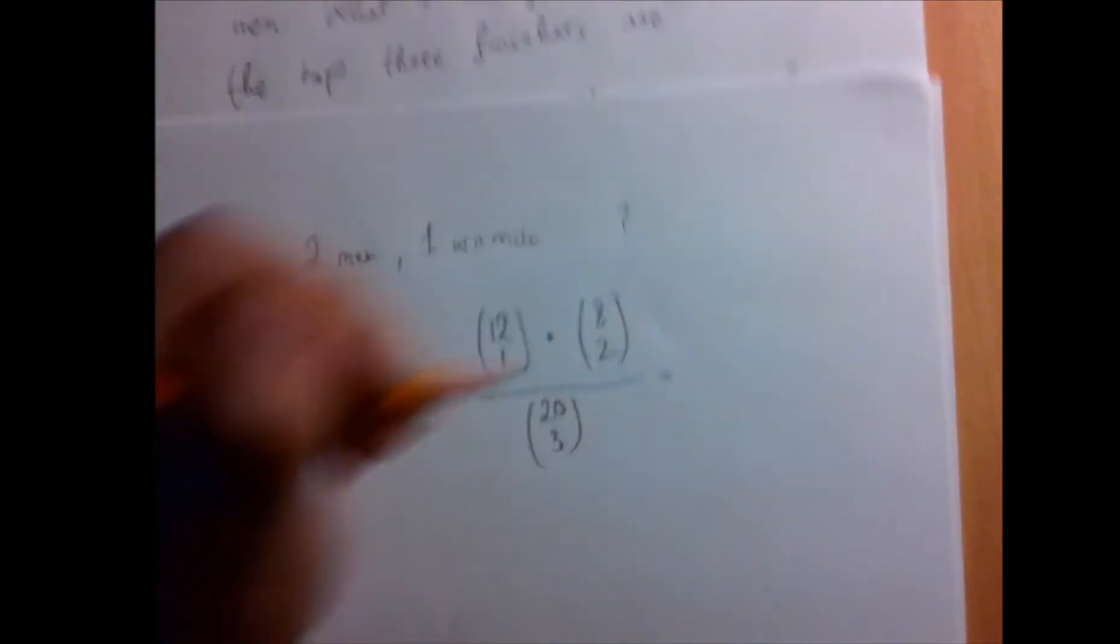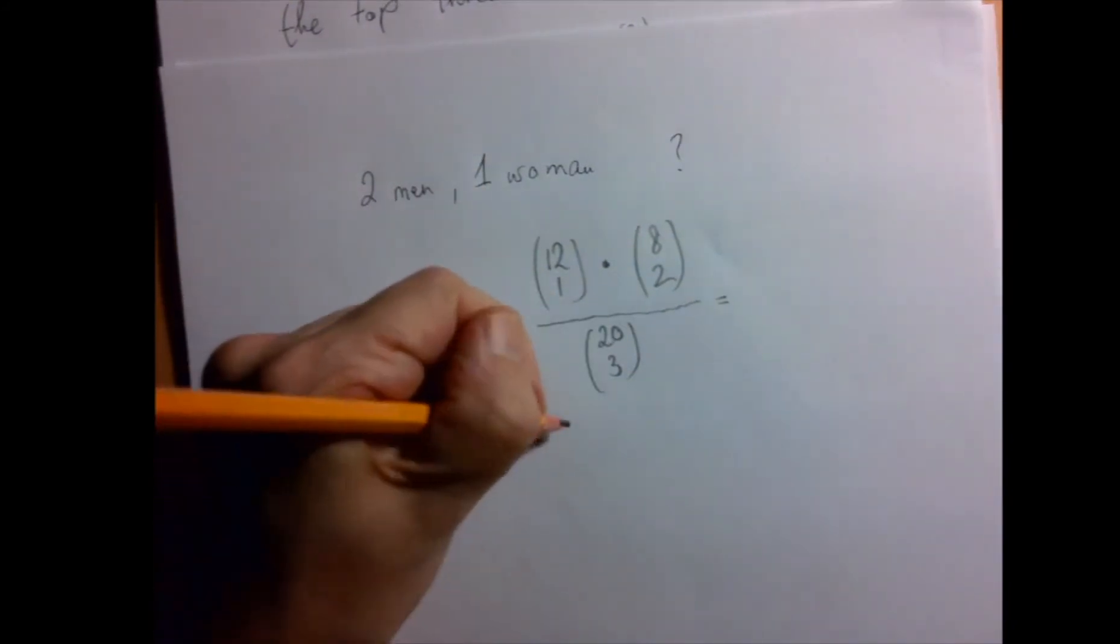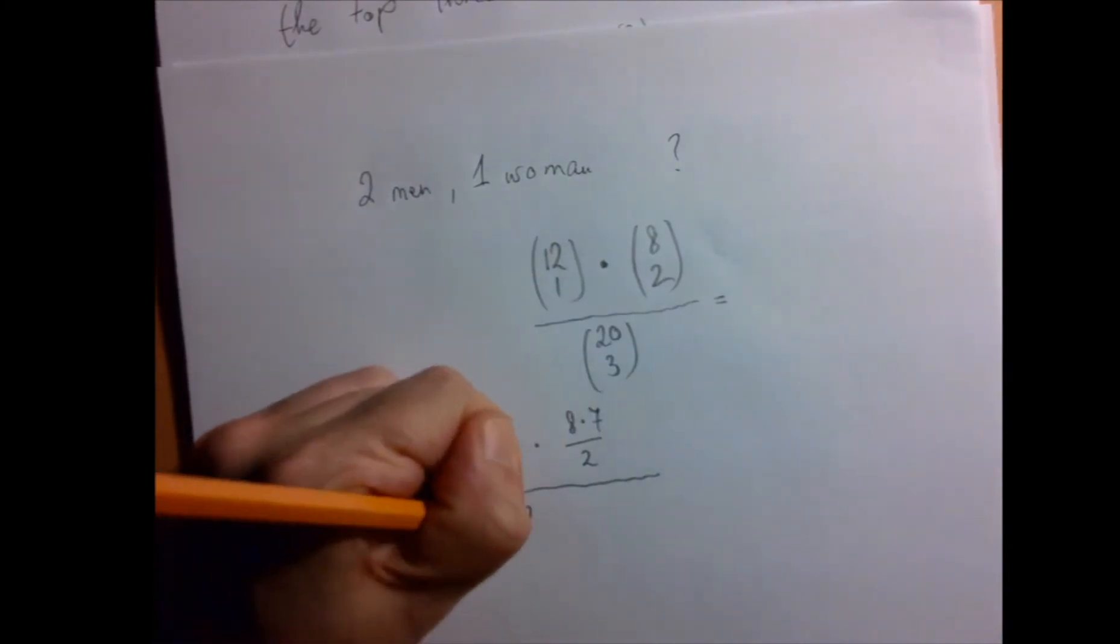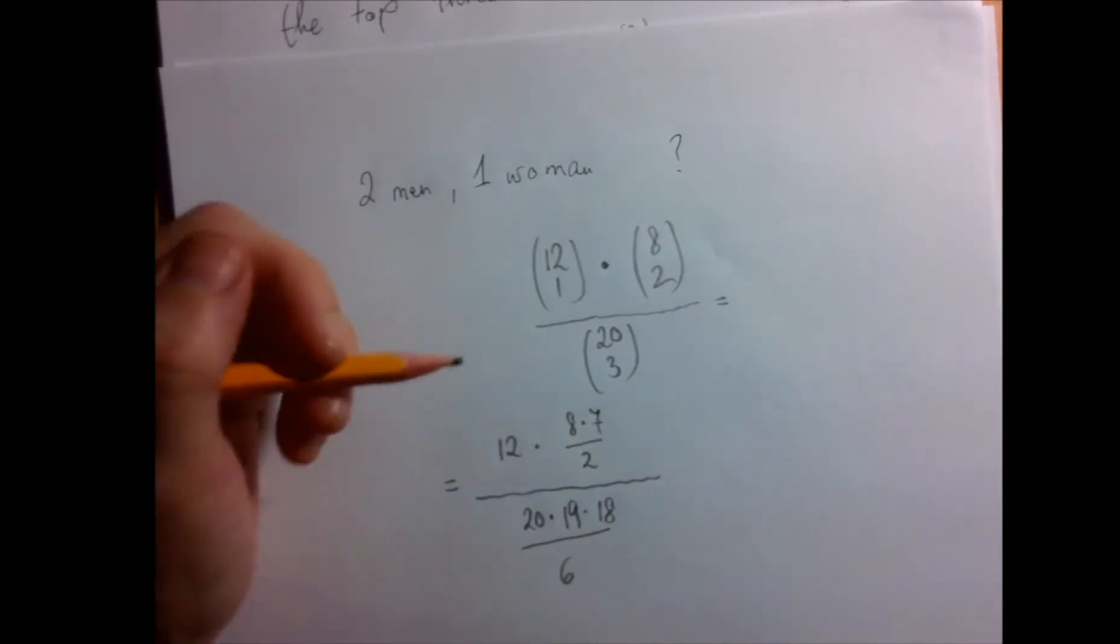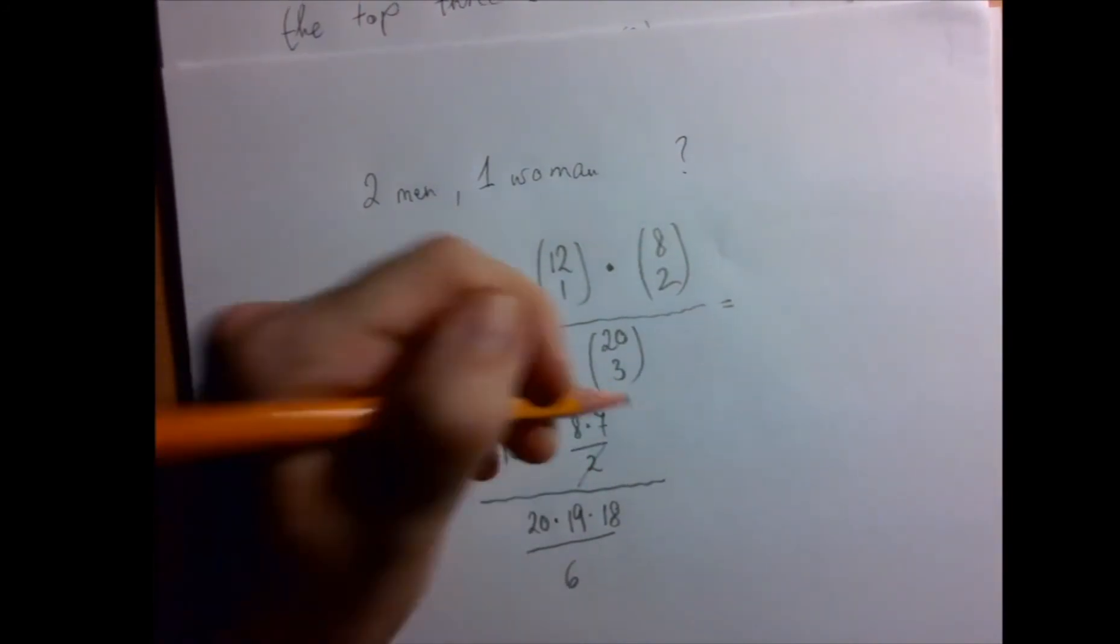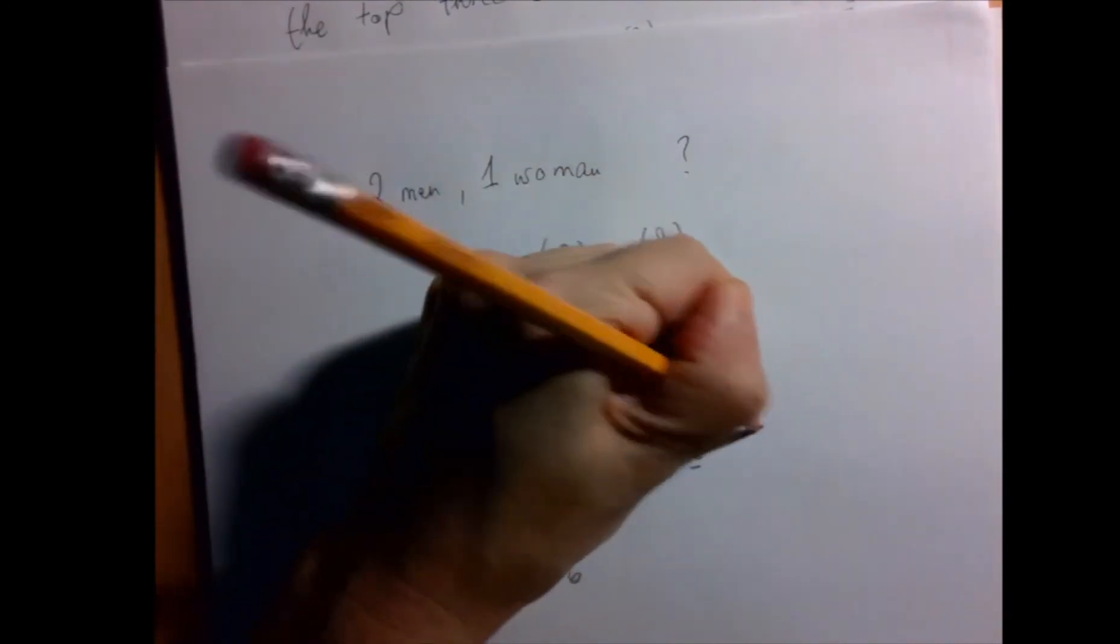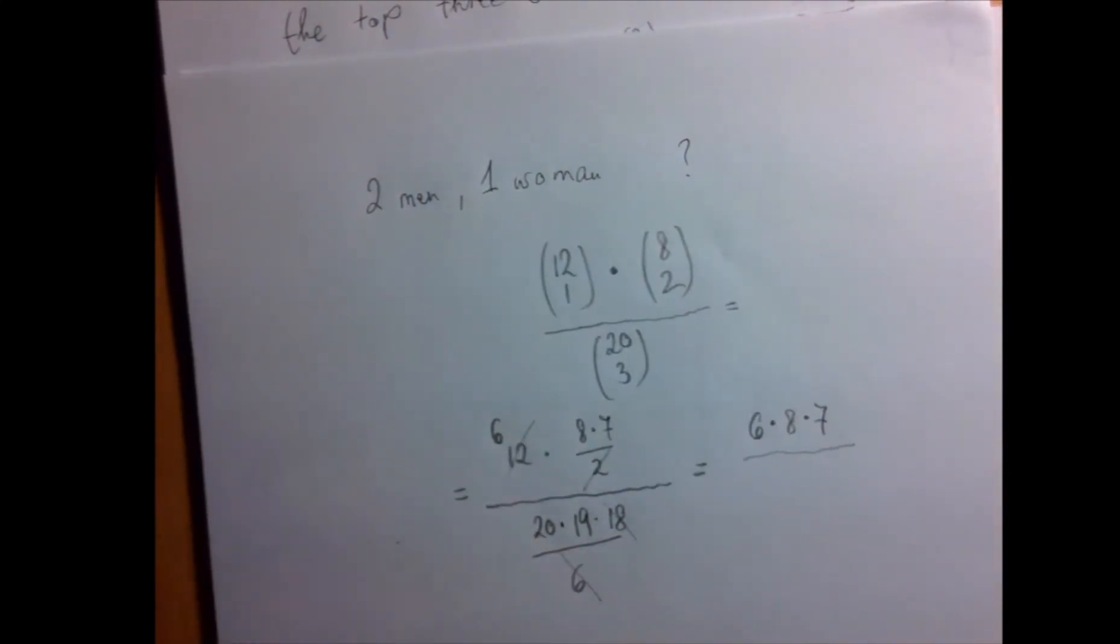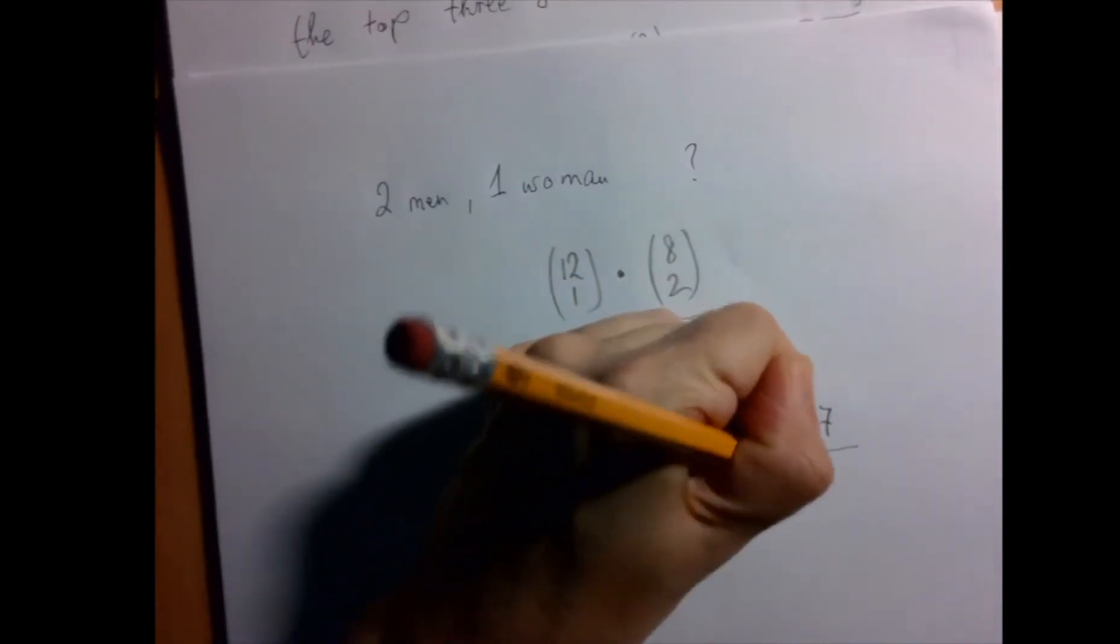So the rest is just crunching numbers. 12 choose 1 is 12. 8 choose 2 is 8 times 7 divided by 2. And 20 choose 3 is 20 times 19 times 18 divided by 6. So let's see a little bit of cancellation. Between the 12 and the 2, that's going to be a 6. So the top is 6 times 8 times 7. And the denominator is an easy cancellation between 6 and 18. So we have 3 times 19 times 20.